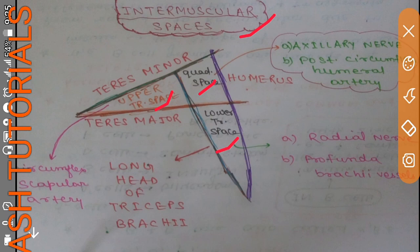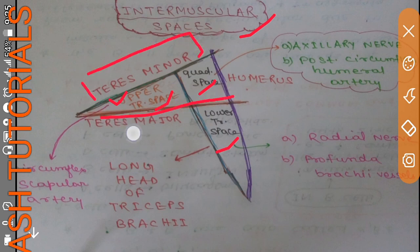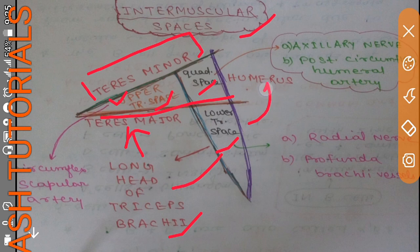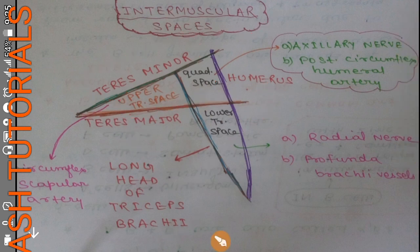This green color is representing teres minor. This is representing teres major. This is representing the long head of triceps brachii, and this is representing the humerus bone.